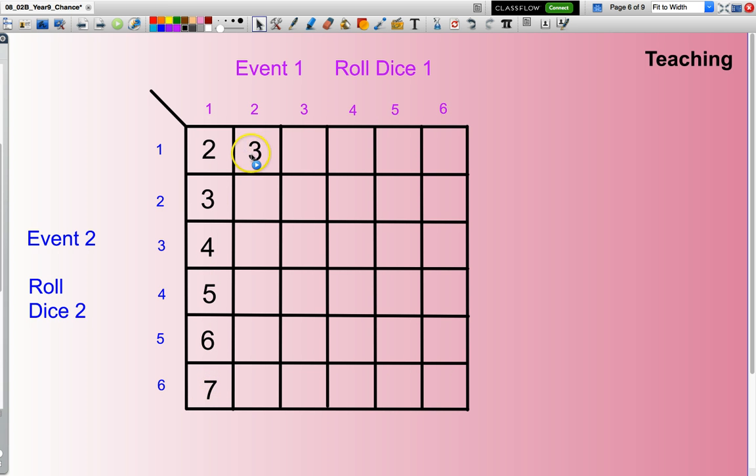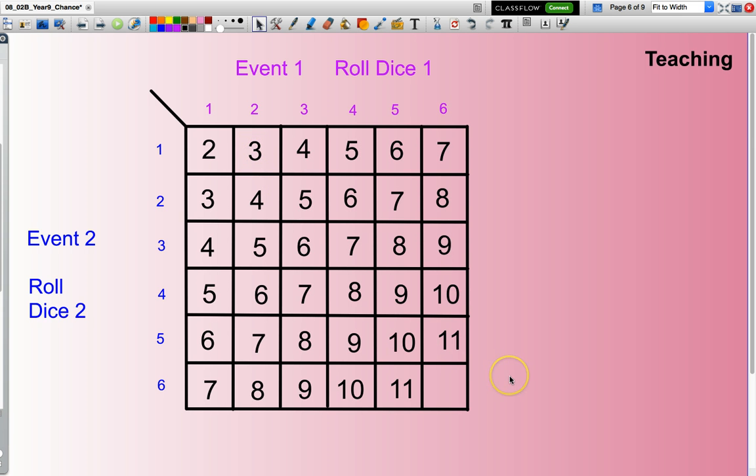I will just fast-forward the video up to completing. Welcome back. What if dice number one, I roll, has a six. Dice number two, I roll, has a six. That total will be equal to 12.